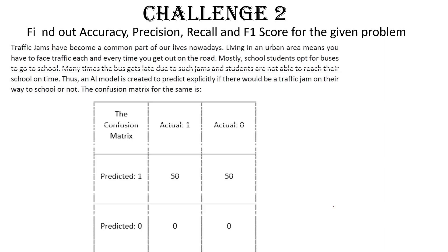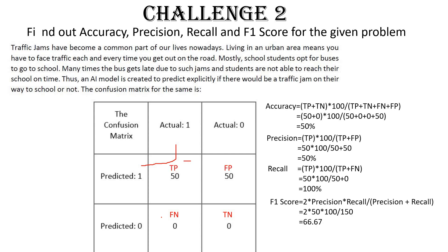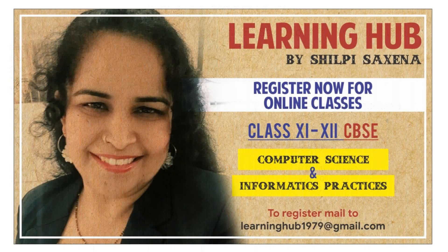Challenge 2: again find precision, recall, and F1 score. The scene involves a traffic jam — whether students will be able to reach school on time. The confusion matrix is given. Again, identify the intersection values carefully: 1-1 means both are same, prediction is yes, so True Positive. Put all four values into the formulas and calculate the four metrics.